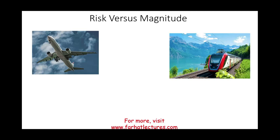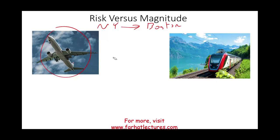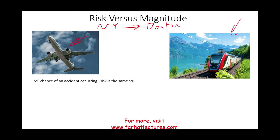Let's assume you want to travel from New York to Boston, and you have two options: you can take the plane or take the train. I'm going to use some figures — not real ones, just to make the point. Let's assume there's a 5% chance of an accident occurring whether you take the plane or the train. So the risk of an accident occurring is 5% — the same for both options.